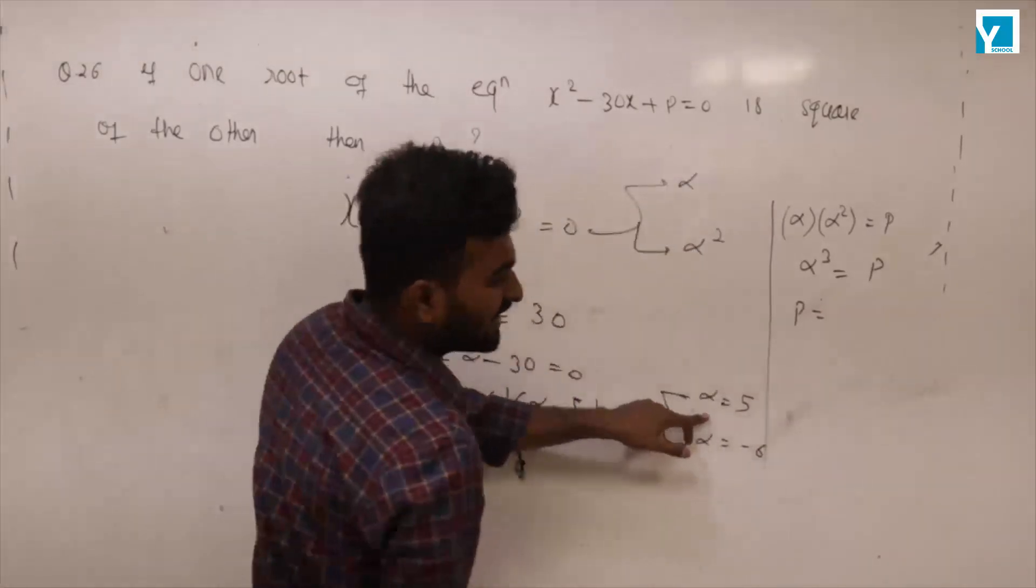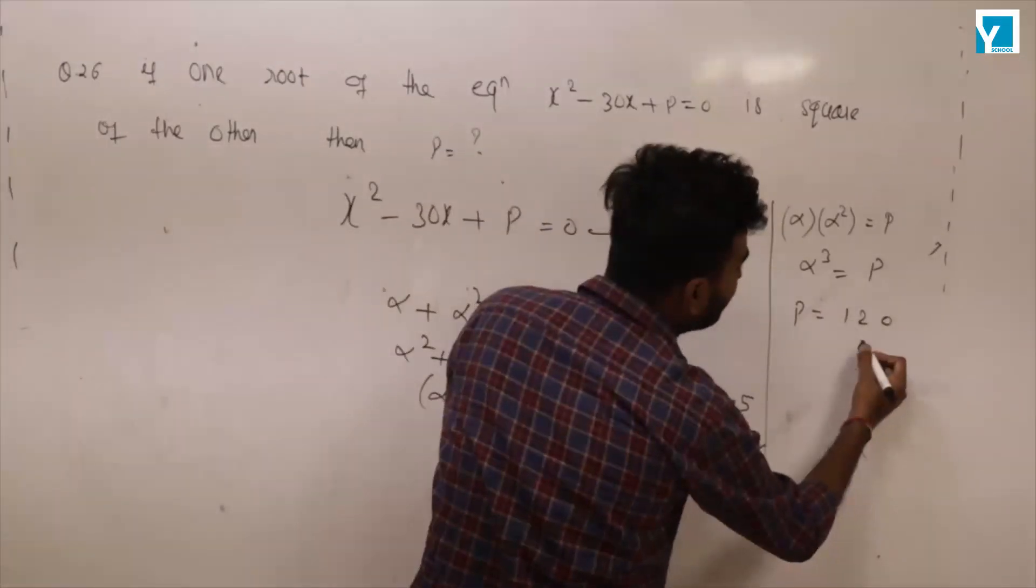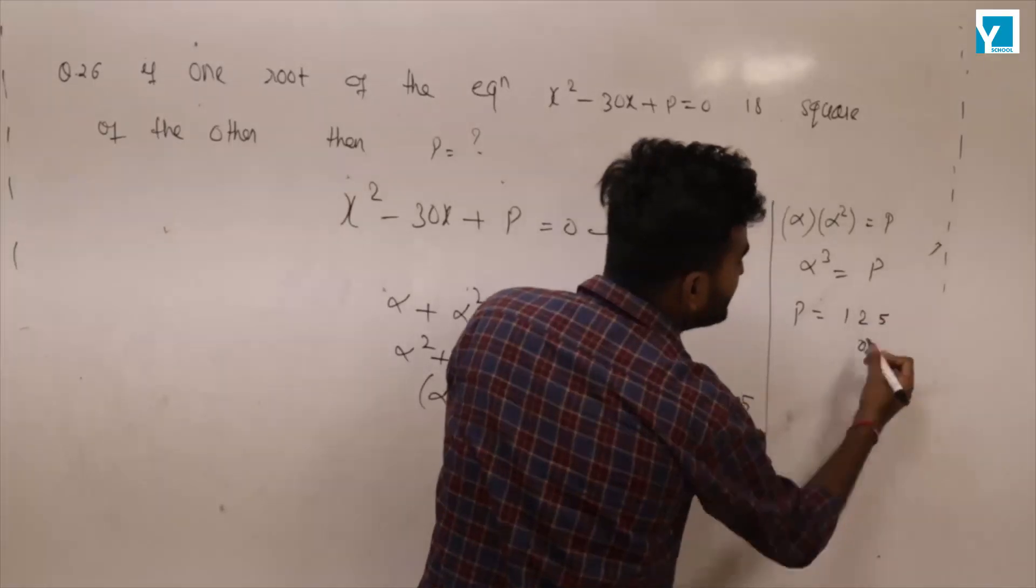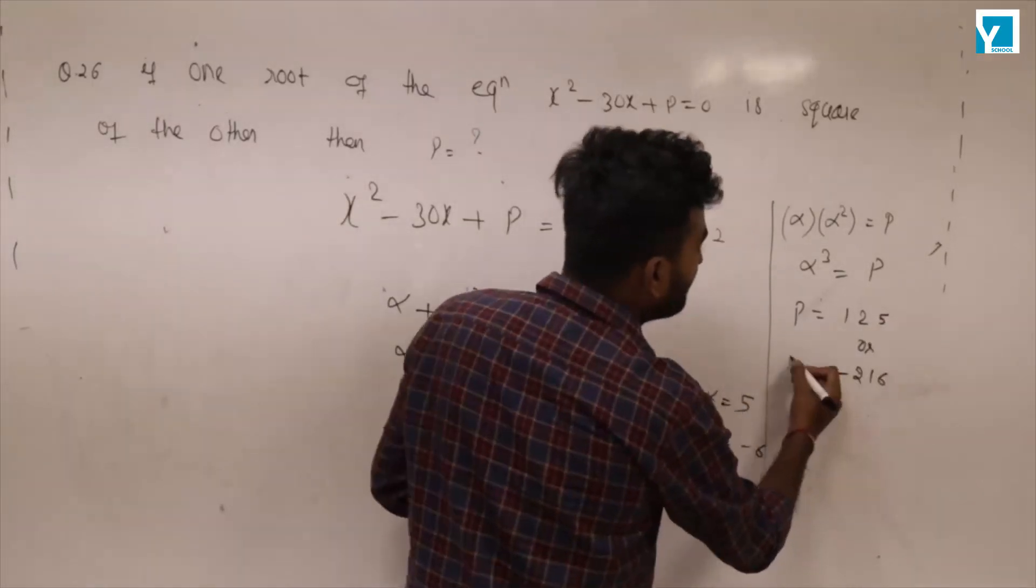So p equal to alpha cubed. So how much is it? 125 or 5 cubed, or minus 6 cubed which is minus 216. So p equal to,